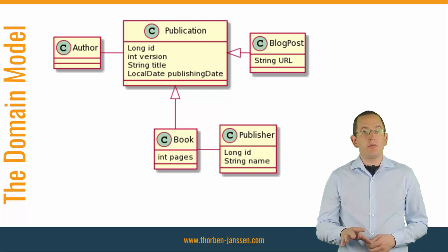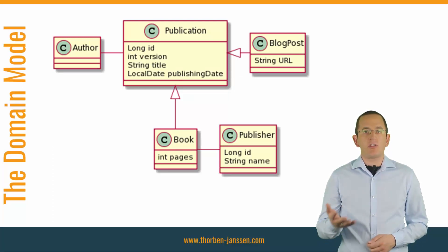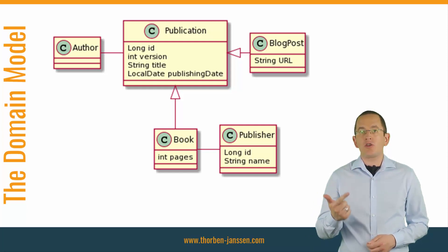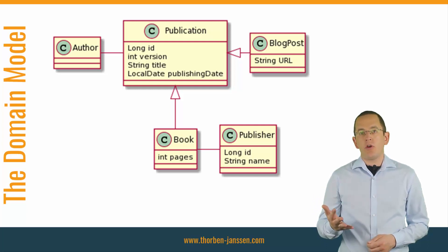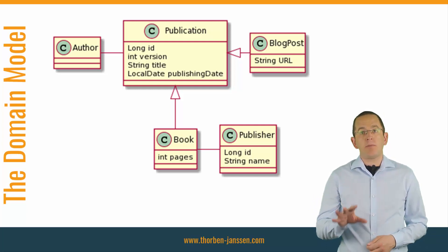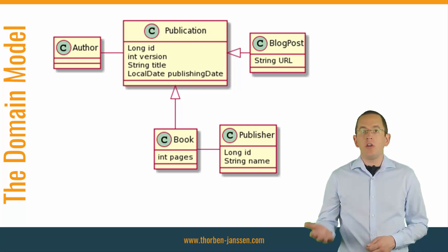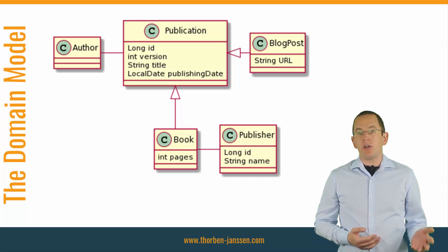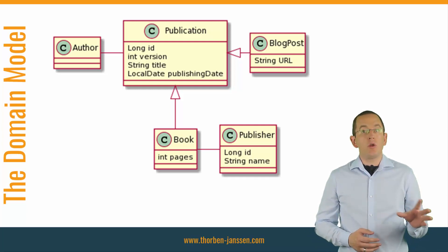The model I'm using is simple. An author can write different kinds of publications like books and blog posts. These two kinds of publications share the attributes id, version, title, publishing date and a reference to the author. Blog posts get published on their author's blog, so they have the additional attribute URL. Books might be published by a publisher, which I modeled as a reference to another entity in our small domain model.